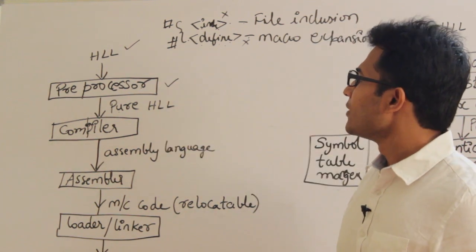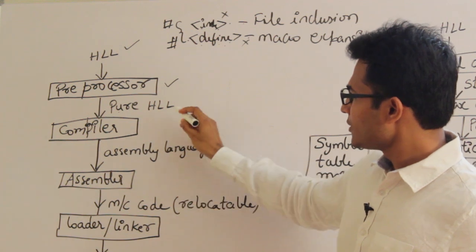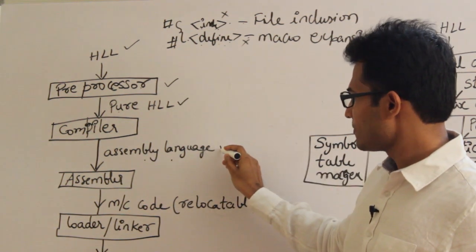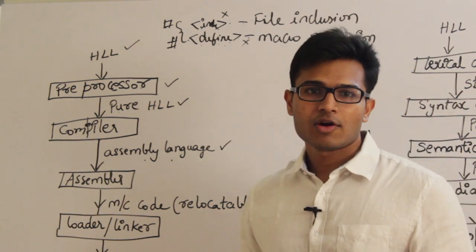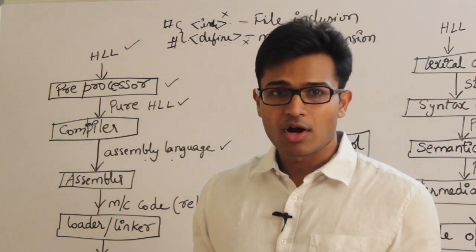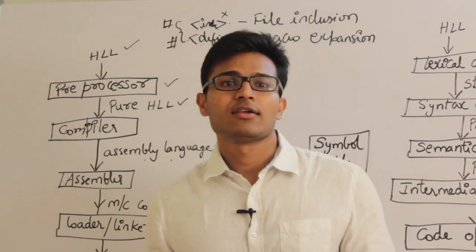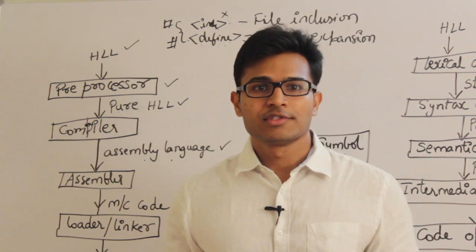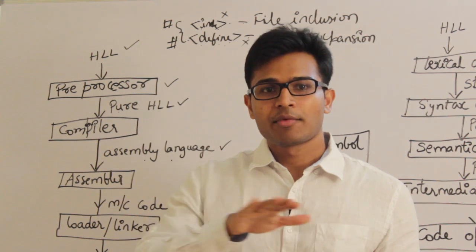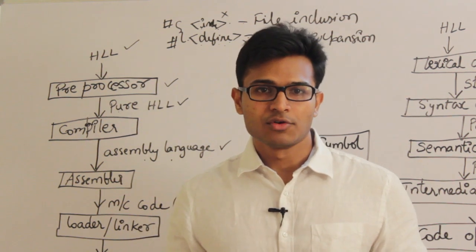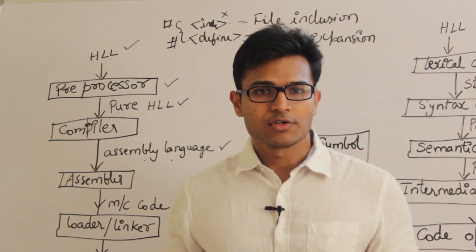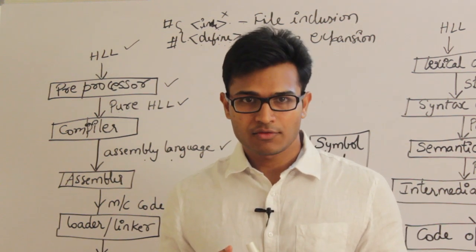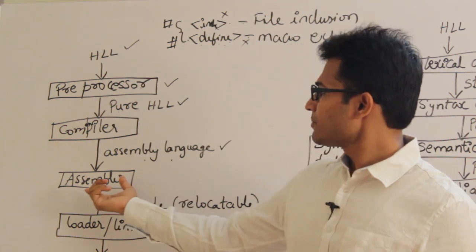The next phase is the compiler. The compiler will take the pure high-level language and convert it into assembly language. For every platform — by platform I mean the hardware you are using, for example Intel, AMD, or Motorola — on top of it the operating system, for example Linux, Windows, 64-bit, 32-bit. So depending on your hardware and operating system, which is also called a platform, we are going to have some assemblers.